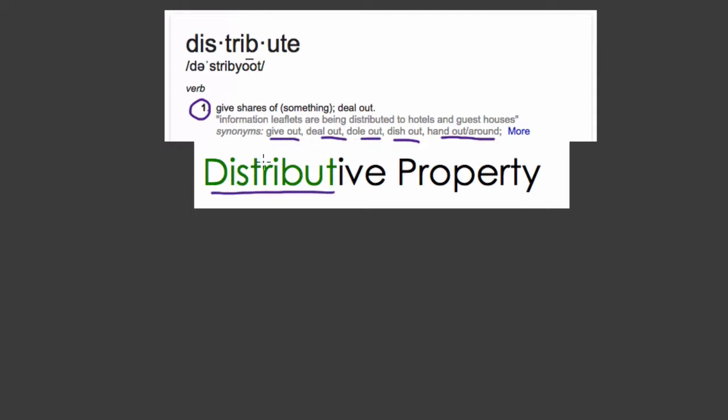And this property, the distributive property, also means the same thing, only with numbers and symbols. So if we have a times b plus c, that means we distribute the a to both b and c using multiplication. Because this means a multiplied by the sum of b and c. So a times b plus a times c is equivalent. This is the distributive property over addition because we're adding.